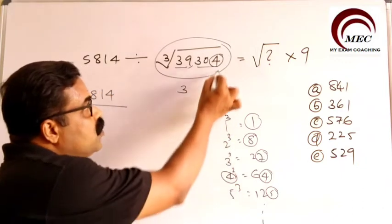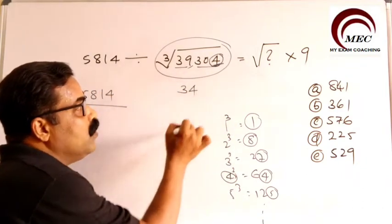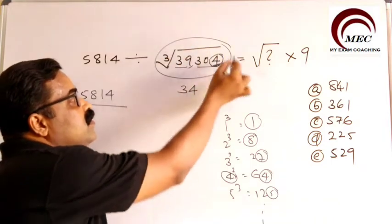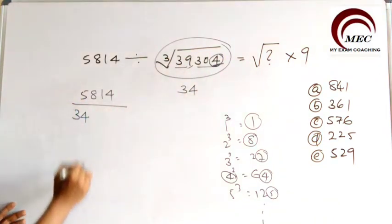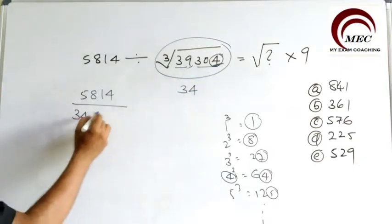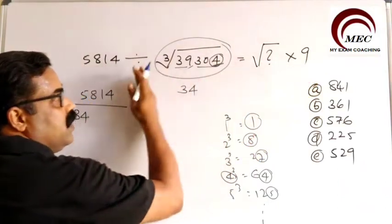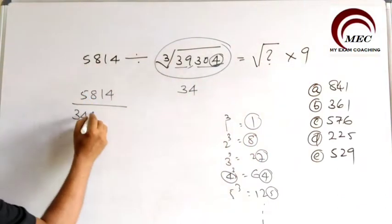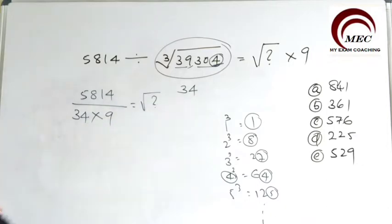The last digit ended with 4, so the cube root will be 4. Therefore, the answer — the cube root of 39304 — is 34. You can write 34 here. If you watch that video, it will be very easy for you. Then this 9 is in multiplication here; if I take that to this side, it will become division, and that equals the square root of the question mark.